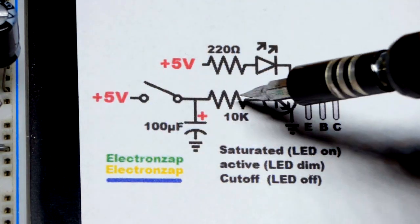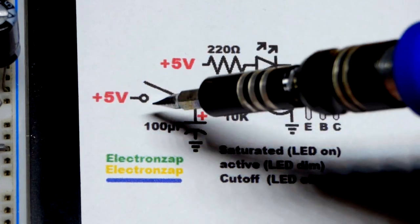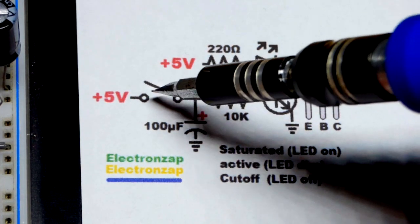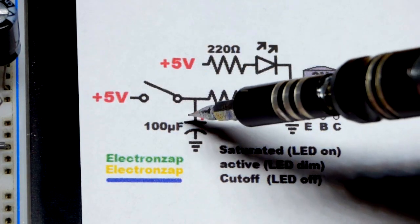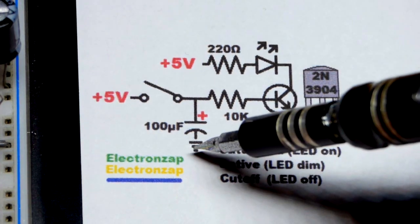When we close the switch, we have enough current to get the LED fully lit. When we close the switch, the capacitor completely charges instantly. When we open the switch, it starts discharging through the resistor and the base to emitter back to ground.